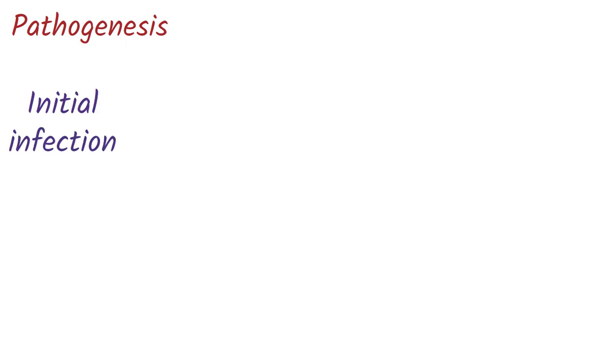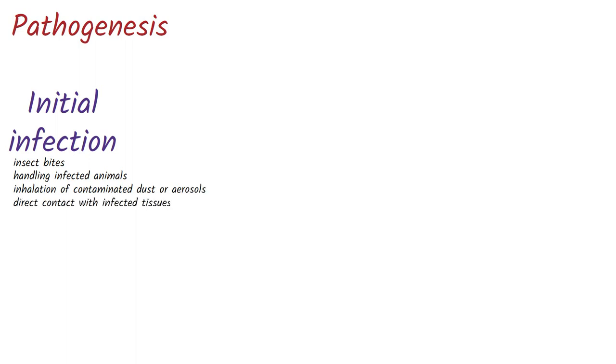Now let's talk about its pathogenesis. The pathogenesis of Tularemia involves the infection and replication of the bacterium Francisella tularensis in the host organism. The first step is initial infection. The bacterium can enter the body through various routes such as insect bites, handling infected animals, inhalation of contaminated dust or aerosols, or direct contact with infected tissues or body fluids.